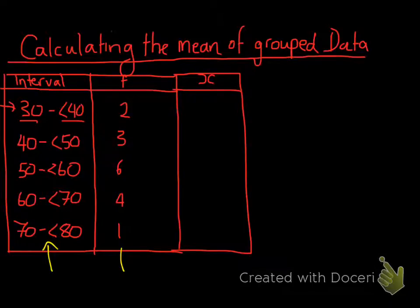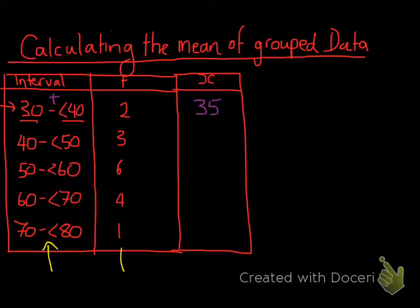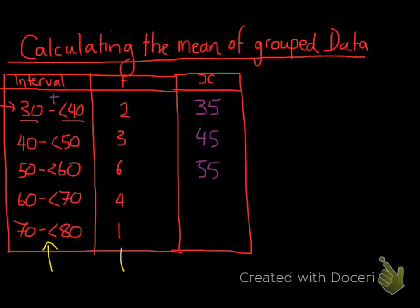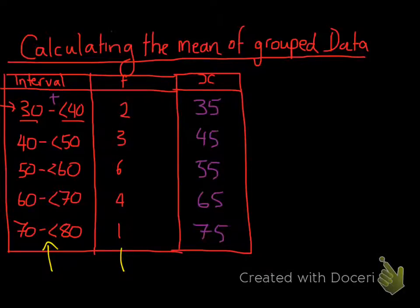The way we calculate the class centre is by adding 30 plus 40 and dividing by 2, which gives us 35. Since these are intervals of 10, we go up by 10 each time: 40 plus 50 divided by 2 is 45, then 55, then 65, then 75. So these are our five class centres. This tells us we've got two data values of 35, three of 45, six of 55, four of 65, and one of 75.